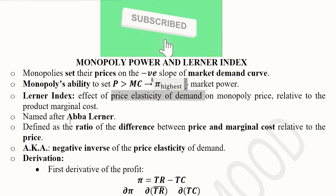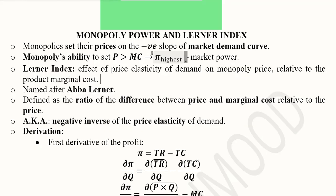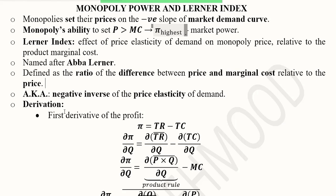This name Lerner Index is based upon the one who gave this idea, named after Abba Lerner. It is defined as the ratio of the difference between price and marginal cost relative to the price. The difference of price and marginal cost is calculated and its ratio will be taken with the price. The Lerner Index is actually the negative value of the inverse of the price elasticity of demand.